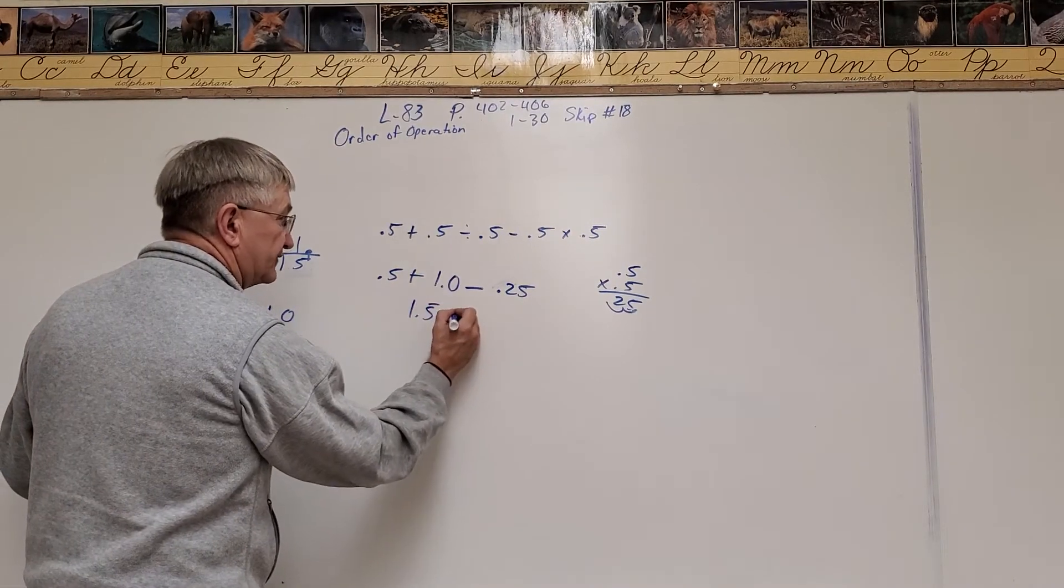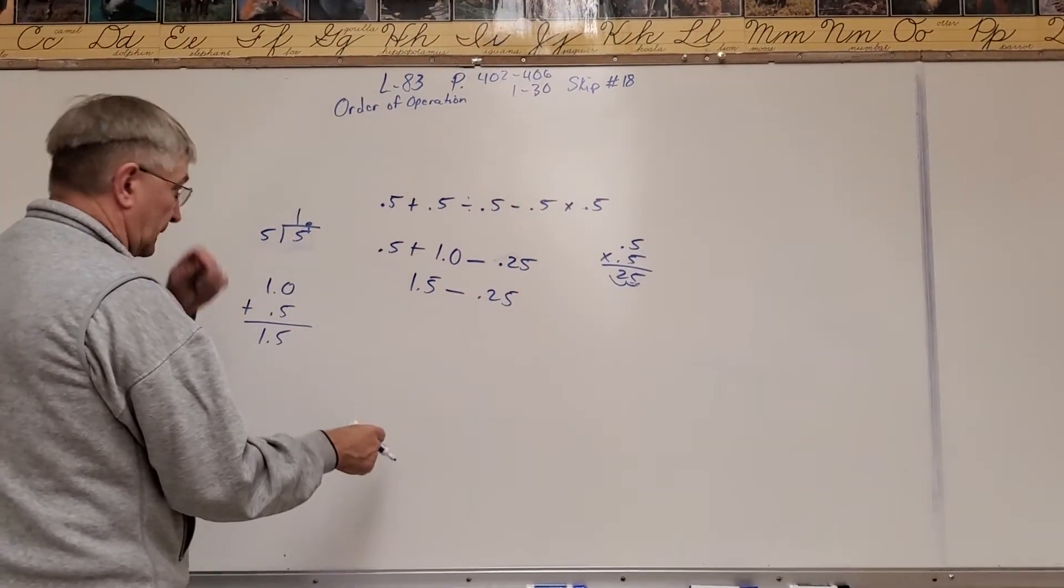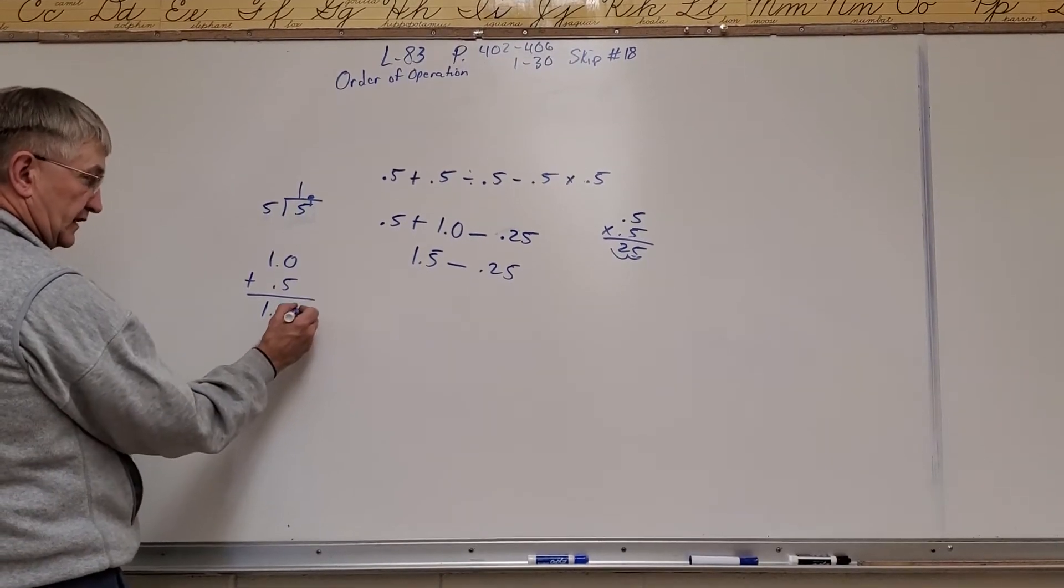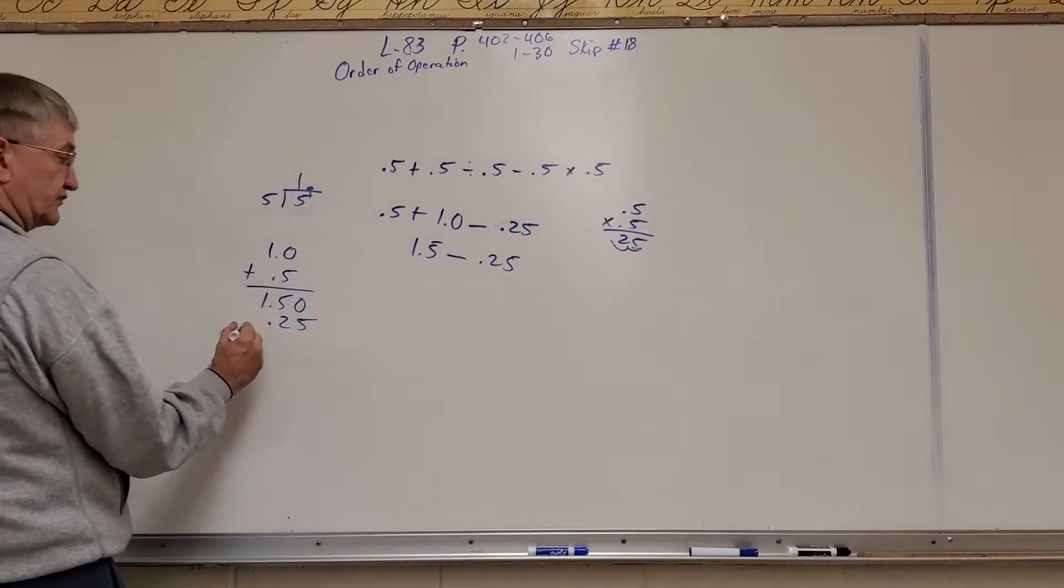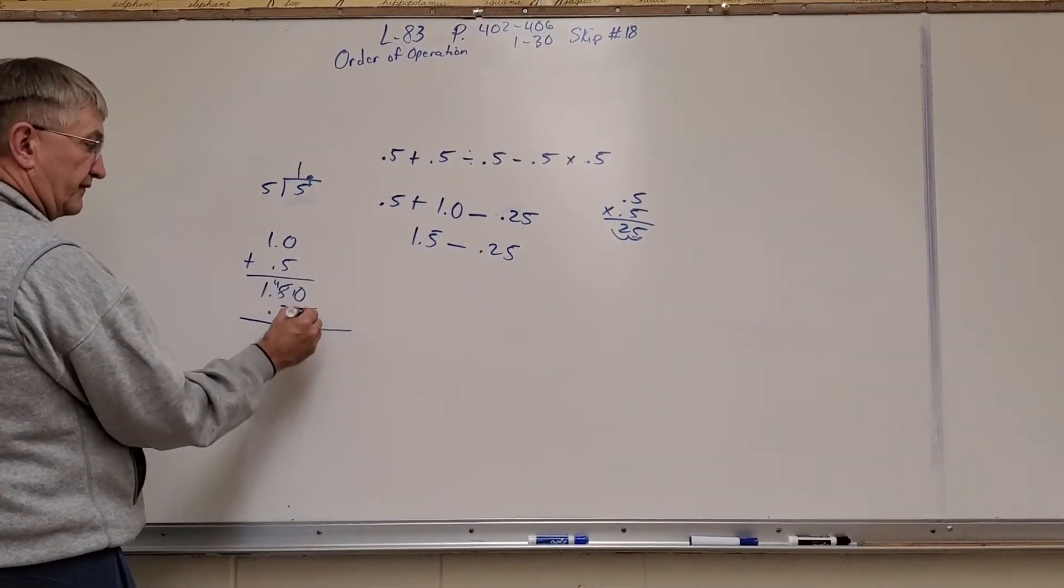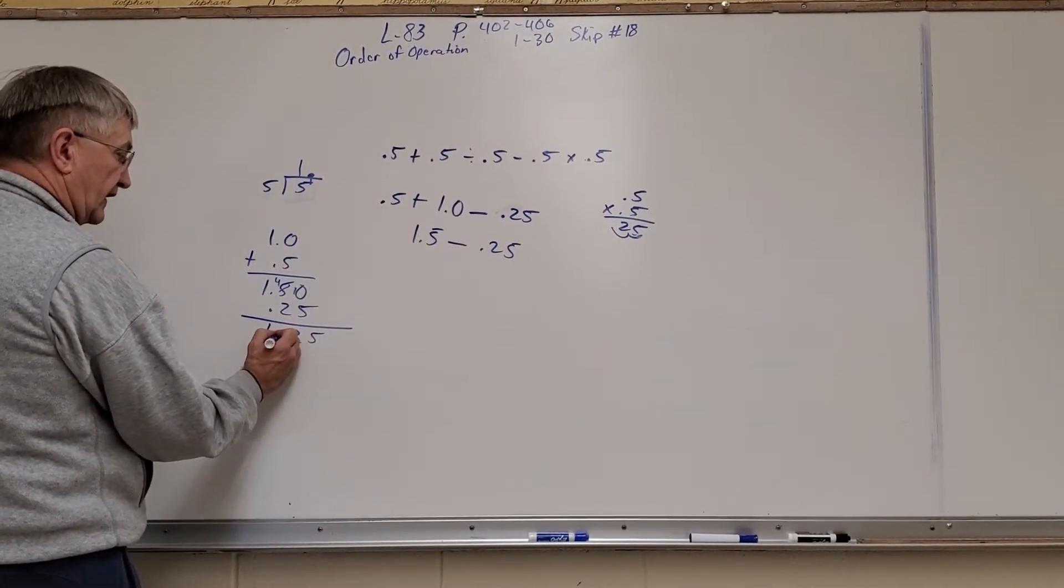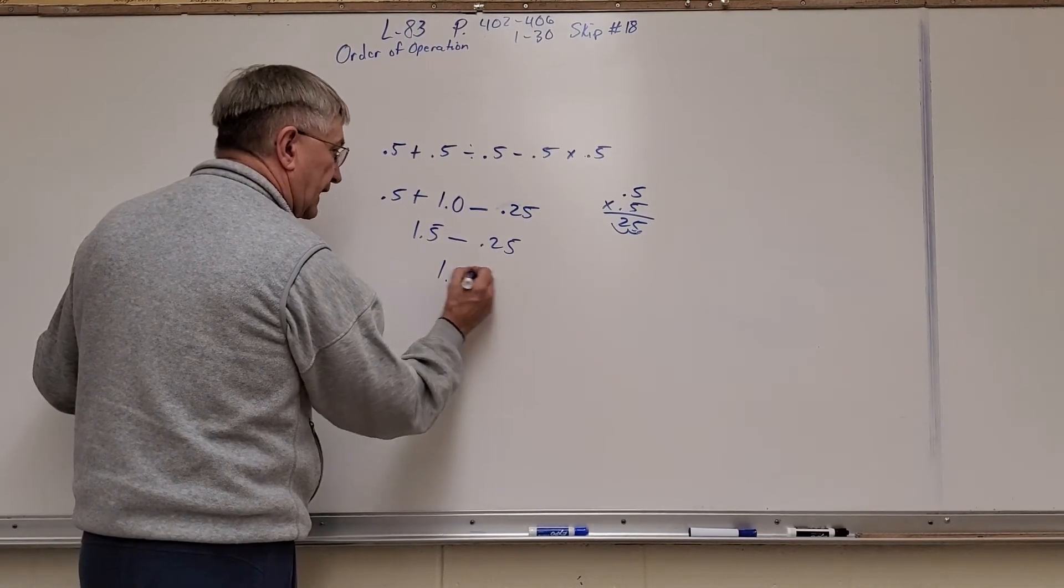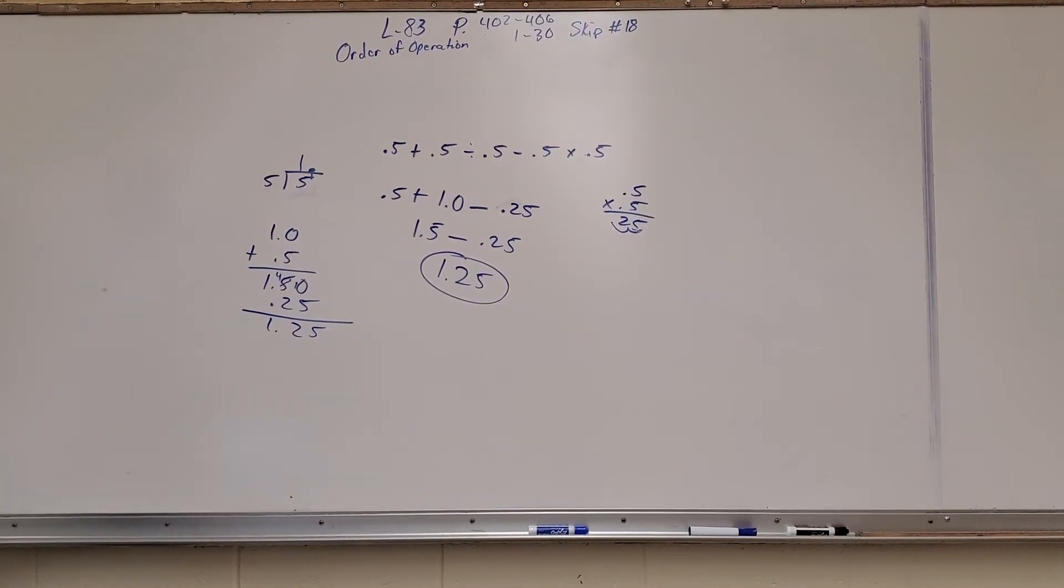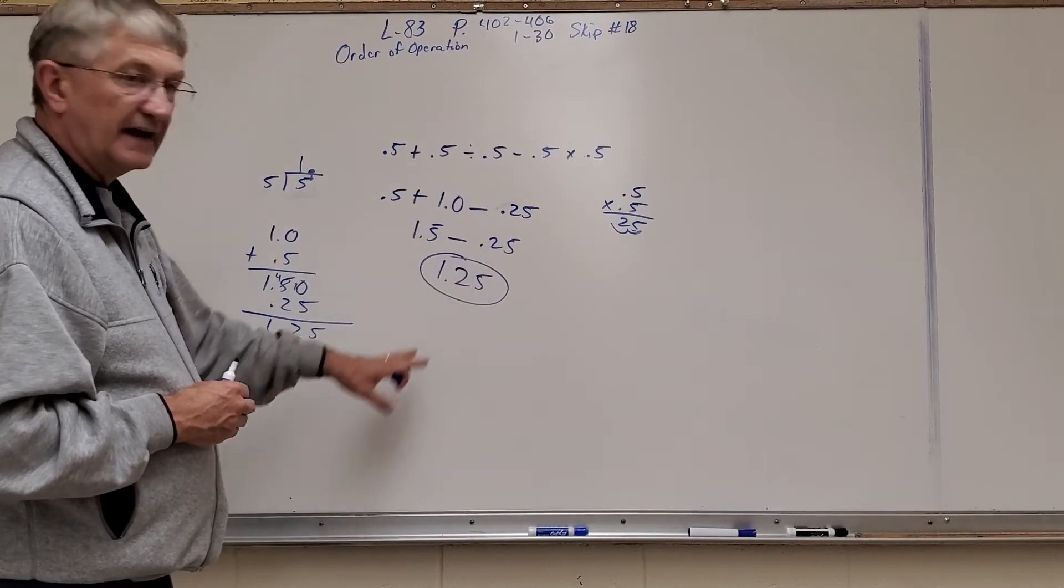So I have 1.5 subtract 0.25 now. And so now I'm going to take that, and I'm going to again line up my decimals, 0.25. Fill in empty places of 0, just like our rule state. And we get it all taken care of. We're going to do the math. We have 4, and we have 5 from 10 is 5. 4 subtract 2 is 2. And our final answer, which is 1.25 for our final answer, doing order of operation from left to right.